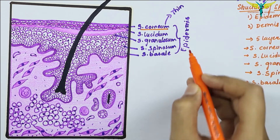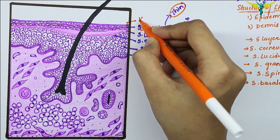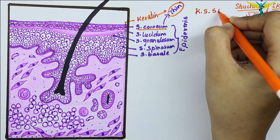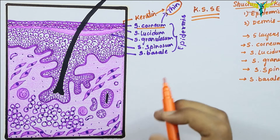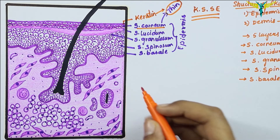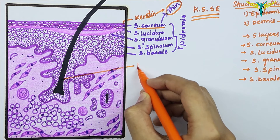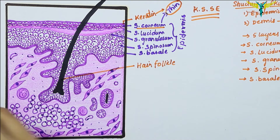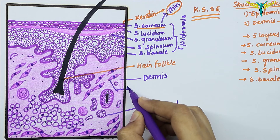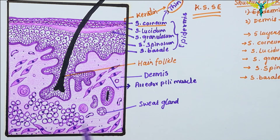In thin skin, the stratum corneum is thin and the keratin layer is also thin, as the epithelium is keratinized stratified squamous epithelium. In the thin skin we can note the presence of several hair follicles and sebaceous glands along with sweat glands — all present in the dermis. Here you can note the hair follicle, and this part is the dermis. These are the erector pili muscles, which are helpful in the erection of the hair follicles.